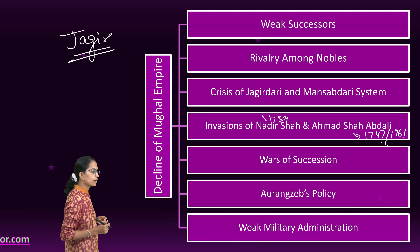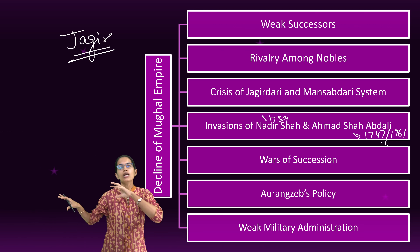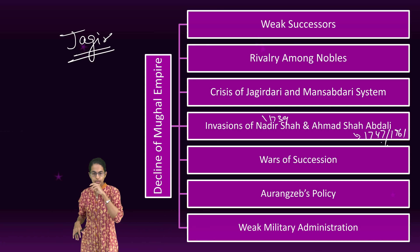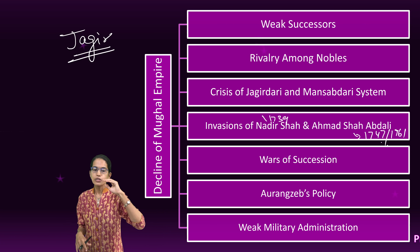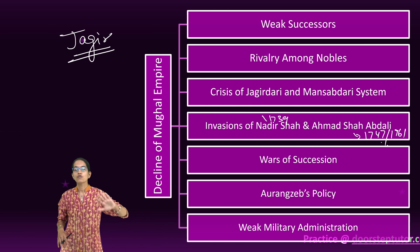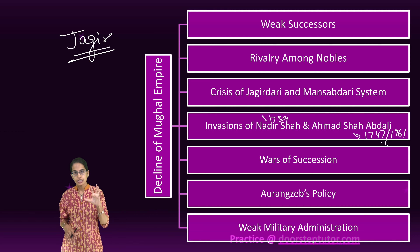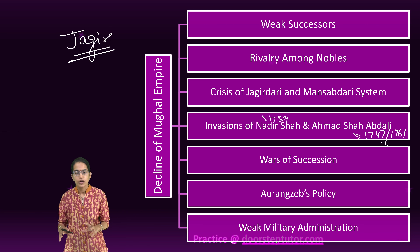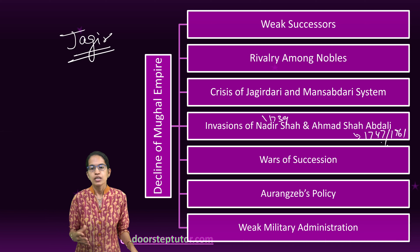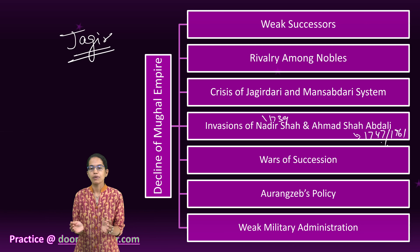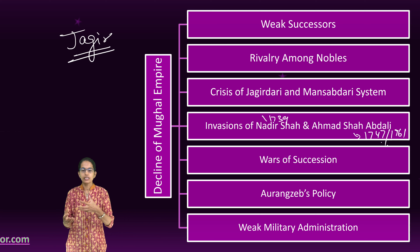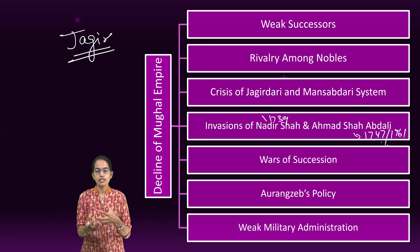After the Mughal Empire, there were numerous small different empires established across India. To summarize, these seven reasons for the decline of the Mughal Empire are extremely important. A good way to remember them: the successors were weak, and since the successors were weak, they were actually puppet rulers.